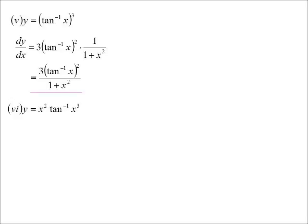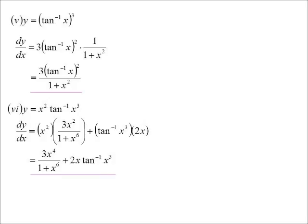Product rule. Write down the first, differentiate the second, plus write down the second, differentiate the first. Faster you say it, more impressive it is. So x squared. Inverse tan of x cubed. Differentiate that. Derivative on top, 3x squared. Over 1 plus the function squared, x to the 6. Plus write down the second, inverse tan x cubed. Differentiate the first. Well x squared is 2x. Tidying that up. There we go. 3x to the 4 over 1 plus x to the 6. Plus 2x inverse tan x cubed.